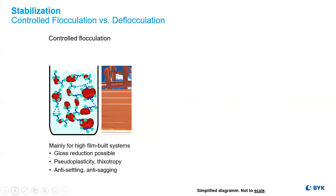What are the pros and cons? Controlled flocculation may have gloss reduction, but imparts thixotropy in the system and provides anti-settling and anti-sag.